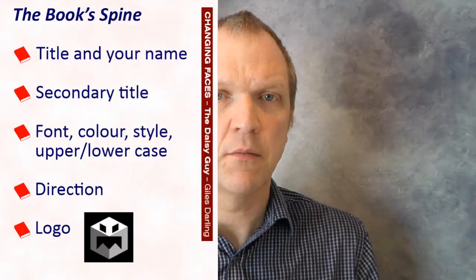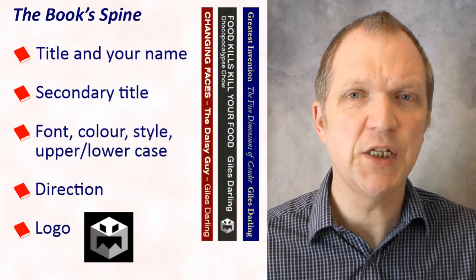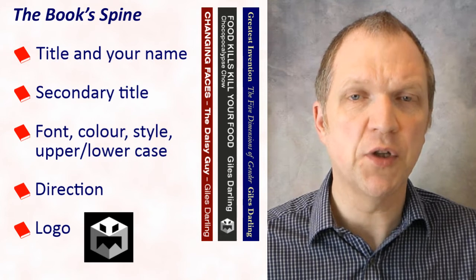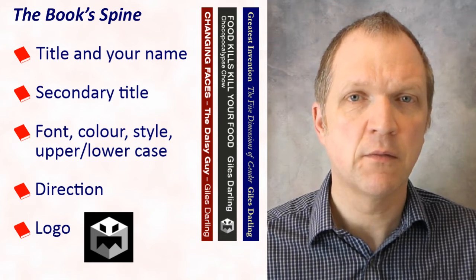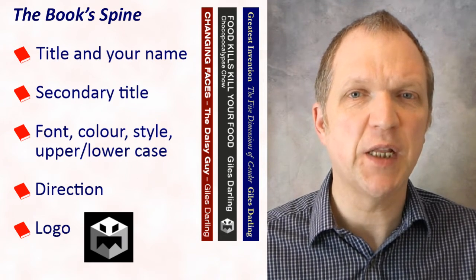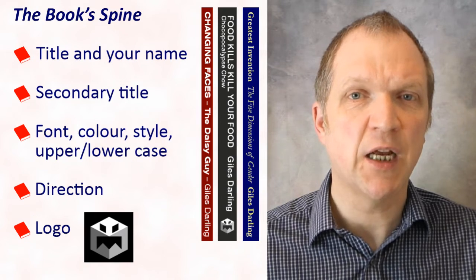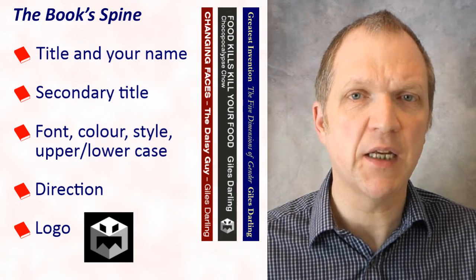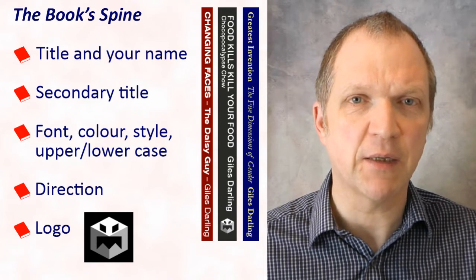Let's discuss what to include on the spine and on the back cover. The spine should include at least your book's title and your name or pen name. If there's enough space you could also include the book's secondary title. To differentiate between the primary and secondary titles and your name or pen name, you could use different fonts, colours, styles, or a mix of uppercase, lowercase or title case lettering.